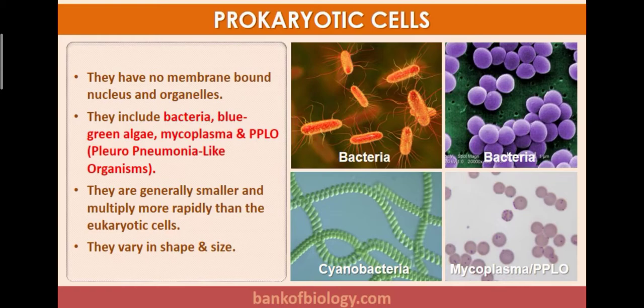Prokaryotic cells have no membrane-bound nucleus and organelles. They include bacteria, blue-green algae (cyanobacteria), mycoplasma, and PPLO (Pleuropneumonia-like organisms). They are generally smaller and multiply more rapidly than eukaryotic cells, because they are single-celled organisms with no sex differentiation, so they multiply quickly.